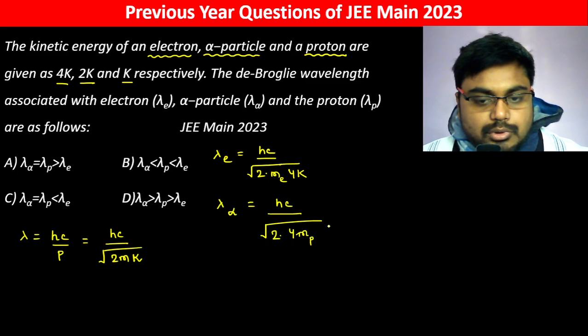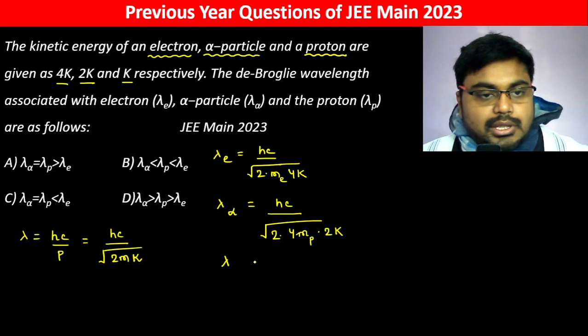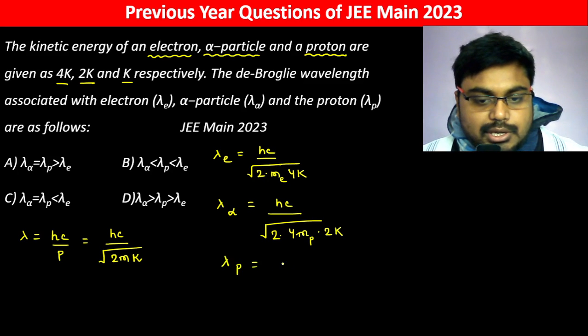...into mass of proton into 2k. And lambda of proton ho jayega hc divided by root of 2 into mass of proton into 2k.